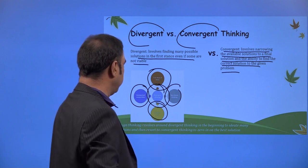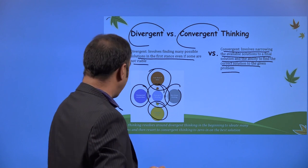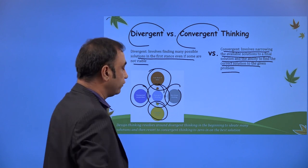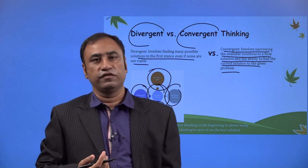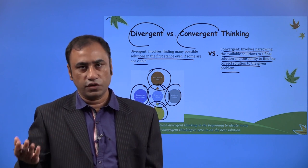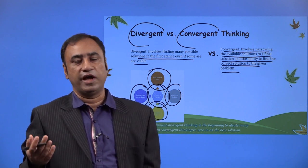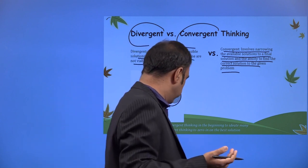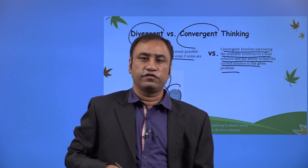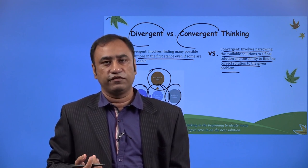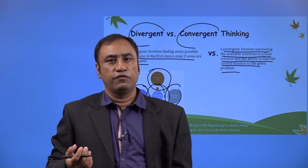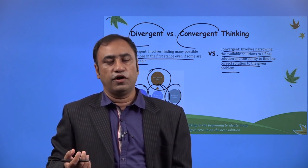Design thinking revolves around divergent thinking in the beginning to ideate many solutions, and then resorts to convergent thinking to zero in on the best solution. It goes from divergent thinking to convergent thinking — initially we have multiple ideas and solution options, but finally we zero down to only the solution which is viable and feasible for our product. This is the introduction and understanding of solution-based thinking. We have moved from problem-based thinking to solution-based thinking, and now we will get into the real processes of design thinking.